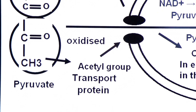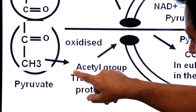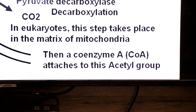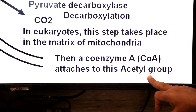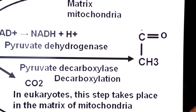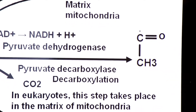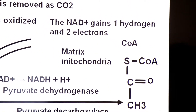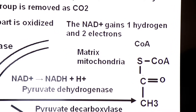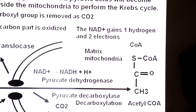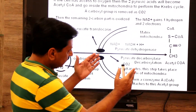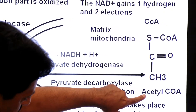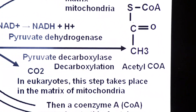This two-carbon fragment is now called the acetyl group. Coenzyme A attaches to this acetyl group. Now look here — this is the two-carbon compound known as the acetyl group, and you can see coenzyme A attaching to it. When coenzyme A attaches to the acetyl group, it leads to the formation of acetyl coenzyme A.